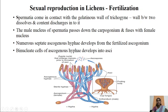Inside the asci, eight oval-shaped ascospores are formed as a result of sexual reproduction. The binucleate cells within the ascus — one nucleus from the male and one from the female — fuse to form a diploid nucleus. This diploid nucleus undergoes meiotic division followed by one mitotic division, resulting in the formation of eight ascospores. Some ascogenous hyphae are sterile, referred to as paraphyses, while the fertile ones bear asci.